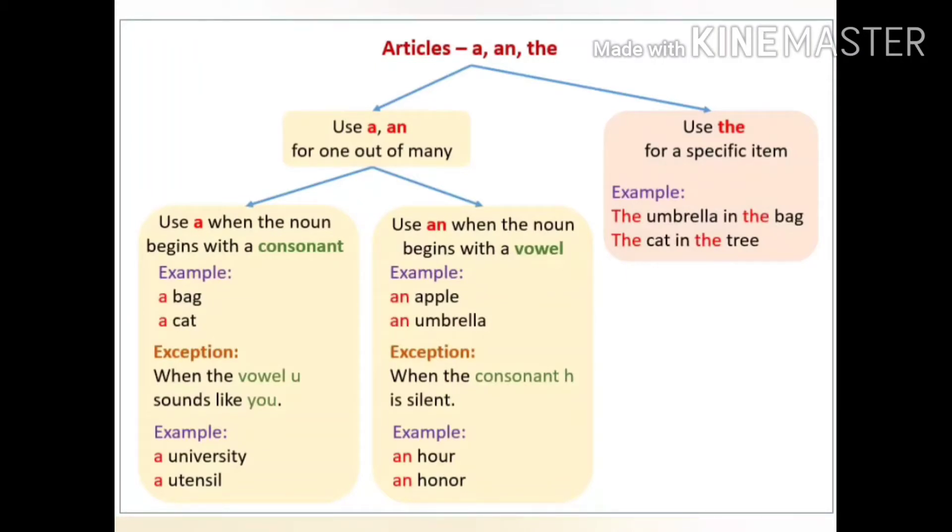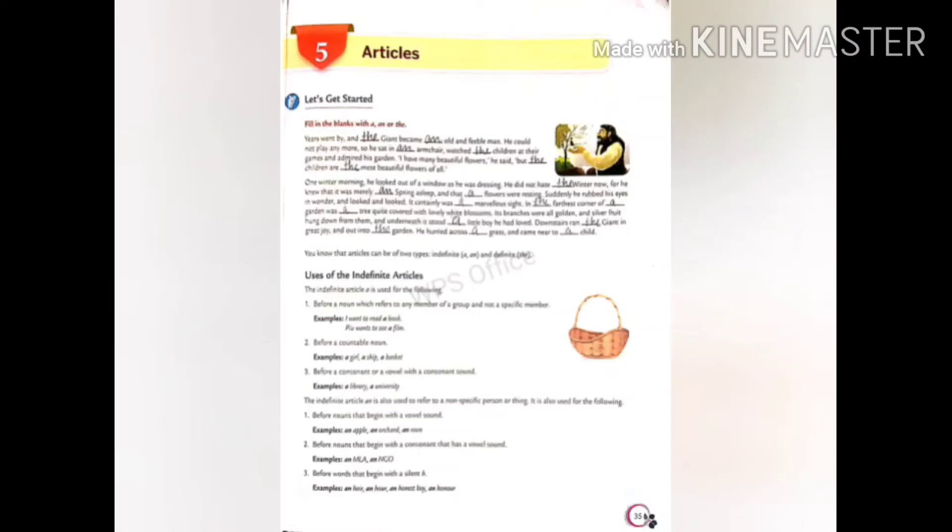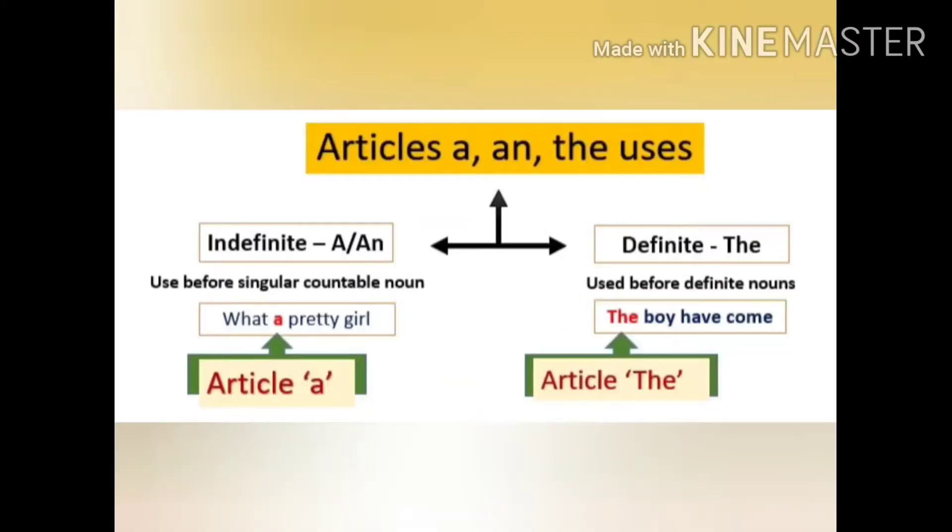Here are some uses of the indefinite articles according to your book. First point is before a noun which refers to any member of a group and not a specific member. Basically, if there is anything which is countable and you can count it, then you can put a before it according to the sound they produce.